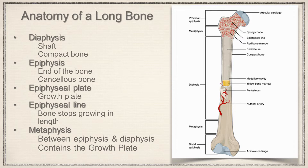Then we have what's called the epiphyseal plate or epiphyseal line. This depends on what stage of development the person is in. If they are still growing, they are going to have an epiphyseal plate — that's the growth plate, and it is made of hyaline cartilage. Once you stop growing and that growth plate ossifies or becomes bone, then we call it an epiphyseal line.